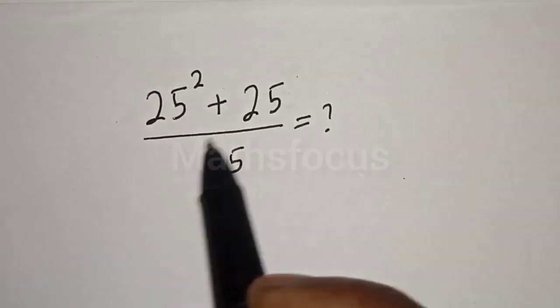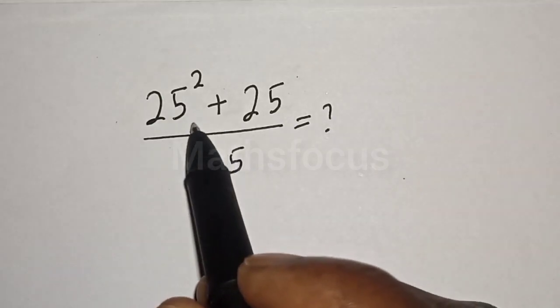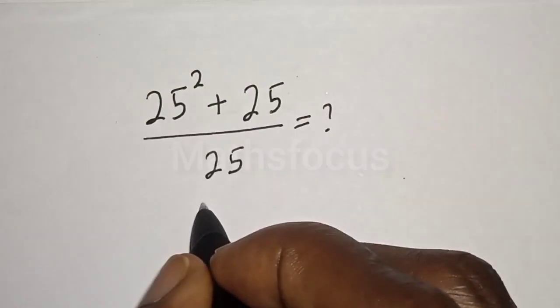25 squared plus 25 over 25 is equal to what? I want to evaluate this math problem and show the solution.